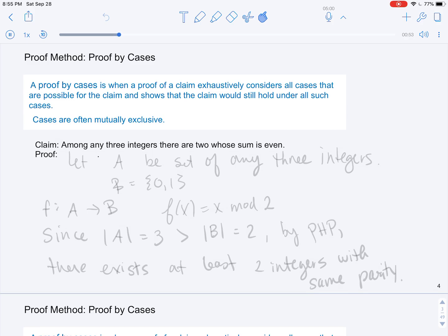We're going to use a proof by cases in order to show the following claim: Among any three integers, there are two whose sum is even. In order to do so, we will use the pigeonhole principle. But first, we need to recall that any integer has a parity, which is whether it's even or odd, and that if two integers have the same parity, their sum will be even.